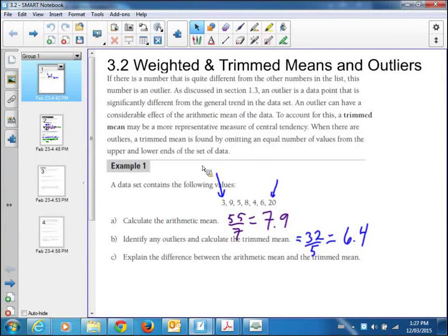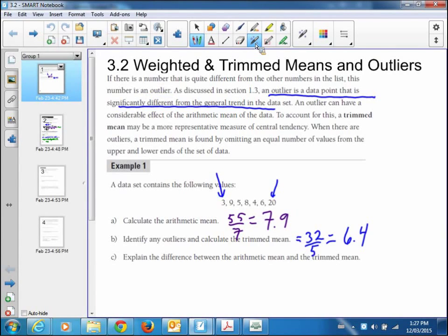Section 3.2 is weighted and trimmed means and outliers. If there's a number that's quite different from the other numbers on the list, this number is an outlier, so it's way beyond the other data. As discussed in section 1.3, an outlier is a data point that is significantly different from the general trend in the data set. An outlier can have a considerable effect on the mean of the data. To account for this, a trimmed mean may be a more representative measure of central tendency. When there are outliers, a trimmed mean is found by omitting an equal number of values from the upper and lower ends of the data.